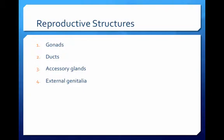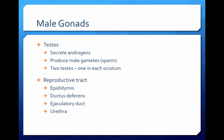The male reproductive system is functionally different from the female reproductive system. The female produces one gamete per month, whereas the male produces up to a half a billion sperm per day. The male gonads are called the testes. They secrete the male hormones called androgens and also produce male gametes called spermatozoa, or sperm.